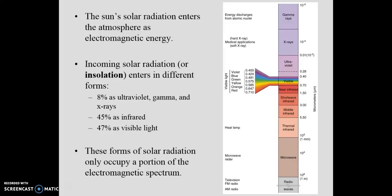So here we are looking at the electromagnetic spectrum. We know that the sun's solar radiation enters the atmosphere as electromagnetic energy. So this incoming solar radiation or insolation enters in different forms. Eight percent enters the earth's atmosphere as ultraviolet, gamma, and x-rays. 45 percent enters the earth's atmosphere as infrared, and 47 enter as visible light. These forms of solar radiation only occupy a portion of the electromagnetic spectrum.